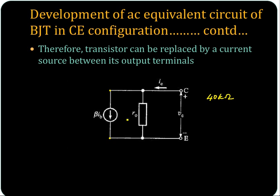From the characteristics we understood that it has a very high value, and therefore the output side is represented using this circuit. So what is this current source? This is the collector current IC.